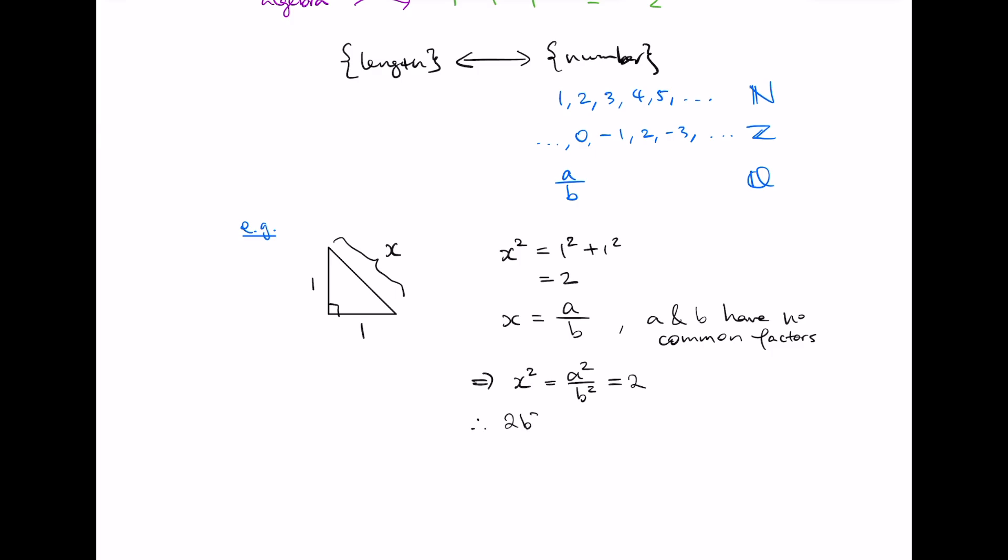So 2b squared equals a squared. So this means that a squared has a factor of 2 in it. And we say that a squared is divisible by 2. But if a squared is divisible by 2, the only way this can happen is if a itself was divisible by 2. So this actually implies that a squared is divisible by 4.